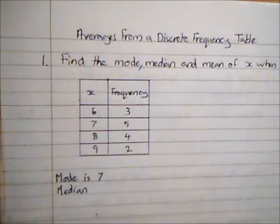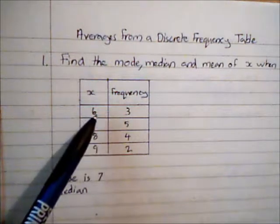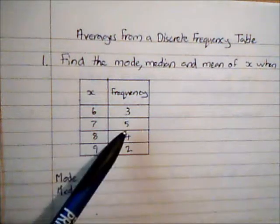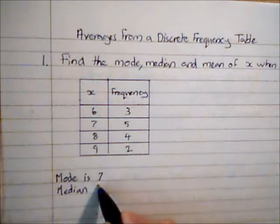The first three pieces of data are all six, and the next five are all seven, so that takes us up to eight pieces of data, which means that the seventh and the eighth bit of data must have both been seven. So the median is seven.